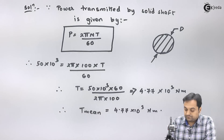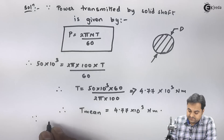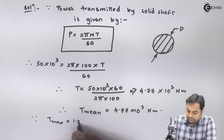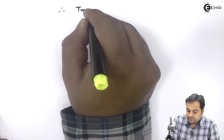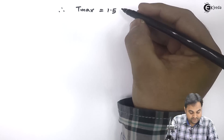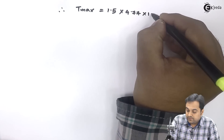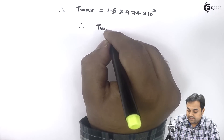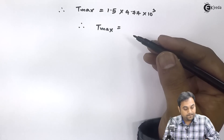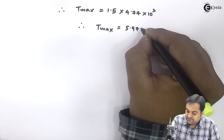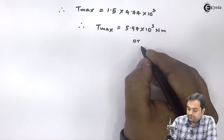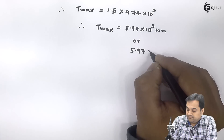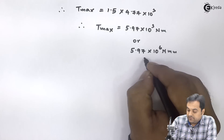This torque obtained from the power formula is the mean torque. Therefore T_mean equals 4.77 into 10 raised to 3 Newton meter. Since T_max is 1.25 times T_mean — that is 25% more — therefore T_max equals 1.25 times 4.77 into 10 raised to 3, which comes out to be 5.97 into 10 raised to 3 Newton meter.